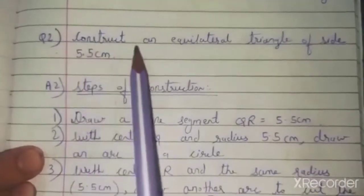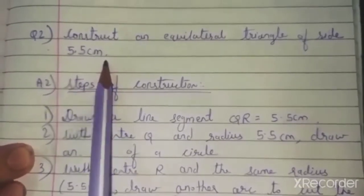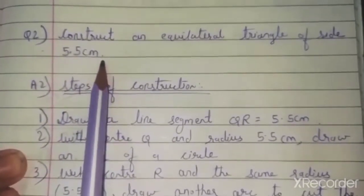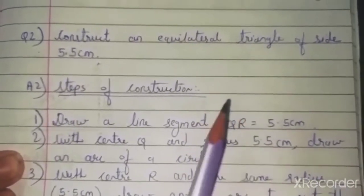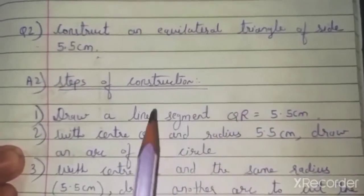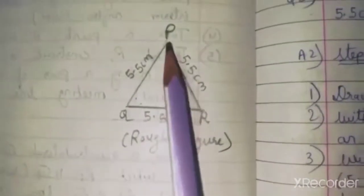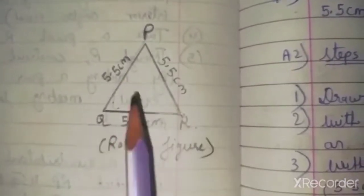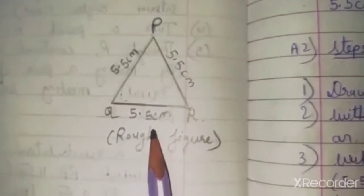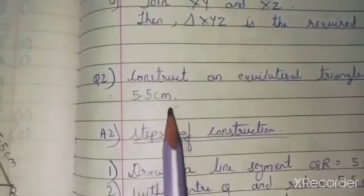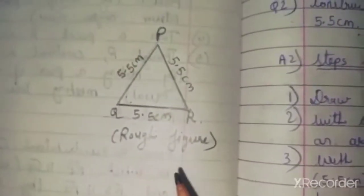Question 2: Construct an equilateral triangle of side 5.5 cm. An equilateral triangle has all three sides equal. For clarity, draw a rough figure — triangle PQR with all sides 5.5 cm, 5.5 cm, and 5.5 cm, since it is equilateral.